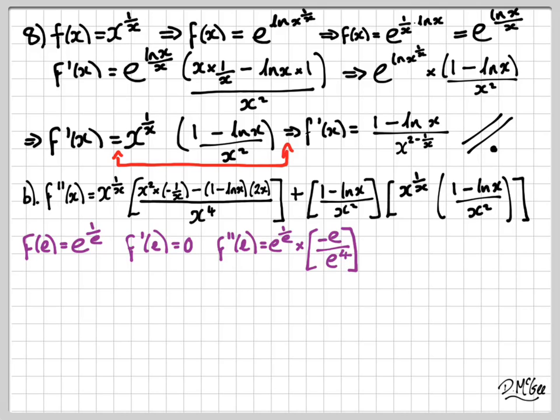f of e is e to the 1 over e. And next, we've got the first derivative evaluated at e, and of course, one of the products in there is 1 minus ln x, and 1 minus ln e is the same as 1 minus 1, which gives me the 0.